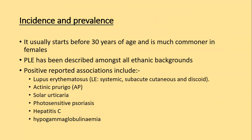The disease usually starts before 30 years of age and is much commoner in females. PLE has been described amongst all ethnic backgrounds. Positive reported associations of polymorphic light eruption include lupus erythematosus — systemic, subacute and discoid — actinic prurigo, solar urticaria, photosensitive psoriasis, hepatitis C, and hypogammaglobulinaemia.